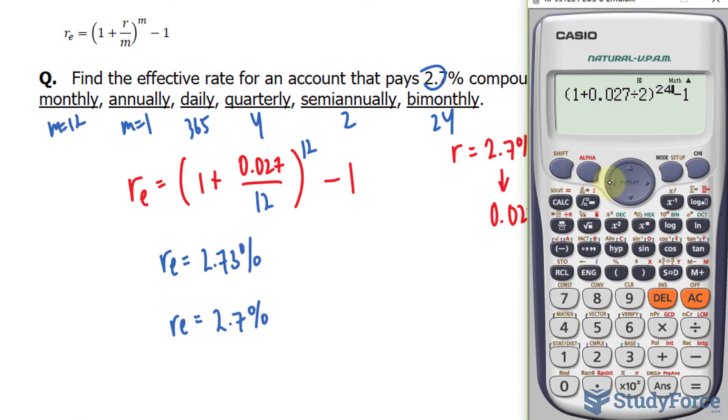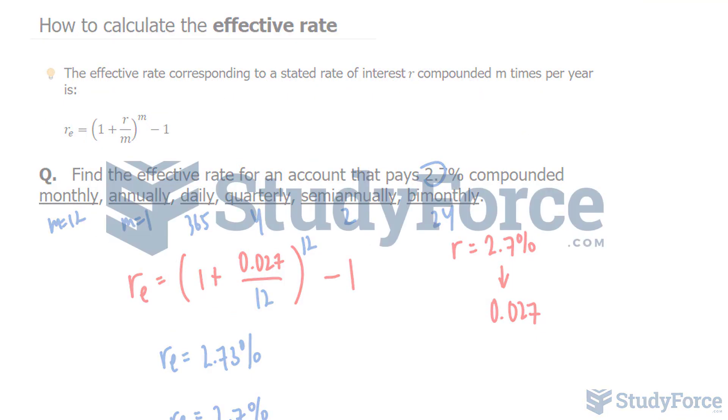And bi-monthly, 24, is 2.7%. And there you have it. That is how to calculate the effective rate.